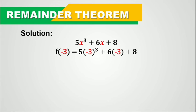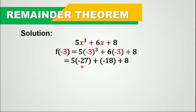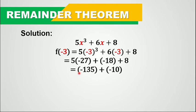So let's substitute negative 3 to the variable x in the polynomial 5x cubed plus 6x plus 8. So we have f of negative 3 equals 5 times quantity negative 3 cubed plus 6 times quantity negative 3 plus 8. So that gives us 5 times negative 27, because negative 3 cubed is negative 27, plus 6 times negative 3, that's negative 18, plus 8. So 5 times negative 27 is negative 135, plus negative 18, plus 8, that's negative 10. Combined, that equals negative 145.